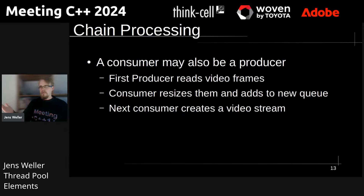The first producer reads video frames. The consumer in the middle consumes those video frames, resizes them, and adds them to a new queue. That queue is then used by the end consumer, which puts them and writes them into a video stream — which either goes out on the network, onto a file, or maybe to a screen. You can complicate that in any way.